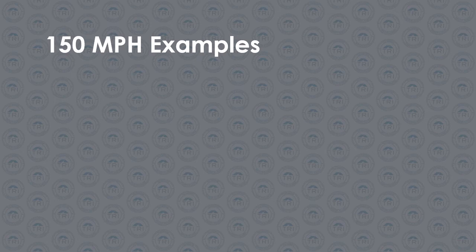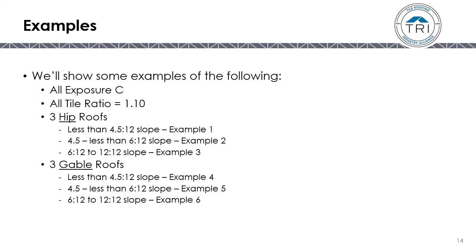We will now look at six examples of roofs at 150 miles per hour. For our examples, we'll make them all Exposure C and use the same tile ratio — a high ratio of 1.10. We'll do three hip roofs at the three different slopes: less than 4.5:12, 4.5:12 to less than 6:12, and 6:12 to 12:12. We'll also do the same slopes for three gable roofs.